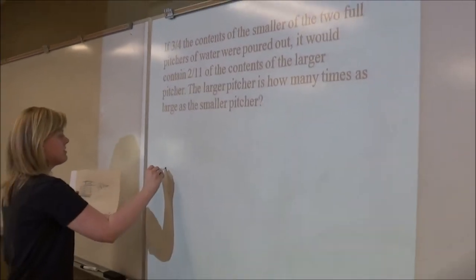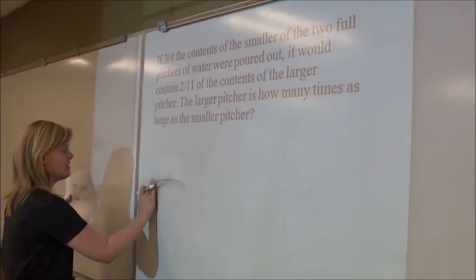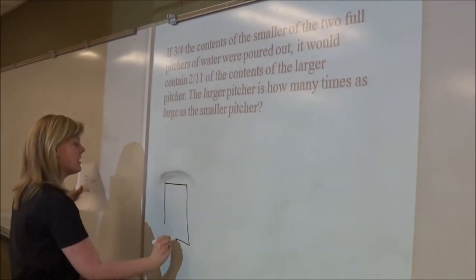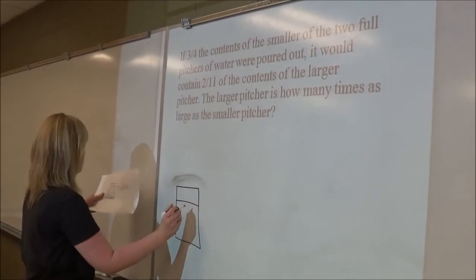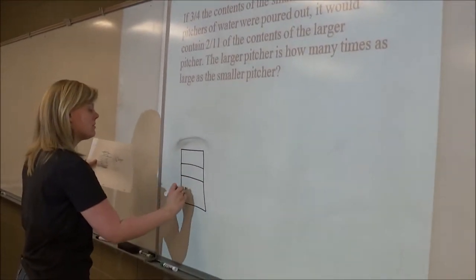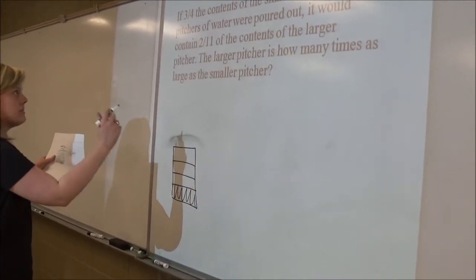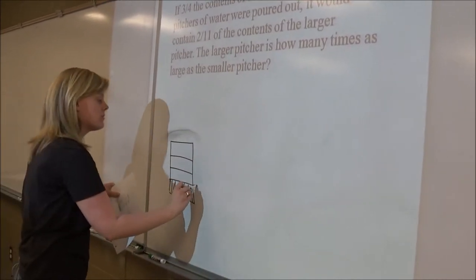So we know that the small one is divided into four pieces because it says that three-fourths of it were poured out. So we have water in this part and then it says that that amount is the same as two-elevenths of the larger one.